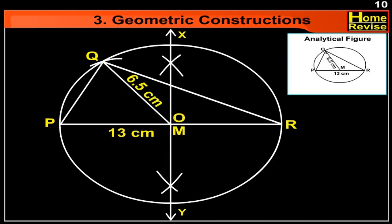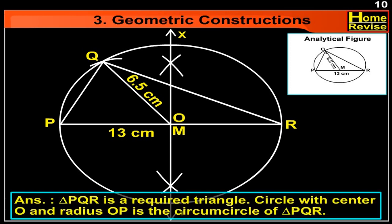Now let us join QM. We will find that QM is equal to 6.5 cm, which equals the radius of the circle. The answer is: triangle PQR is the required triangle. The circle with center O and radius OP is the required circumcircle of triangle PQR.